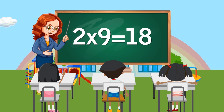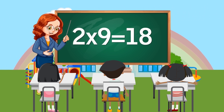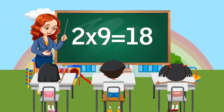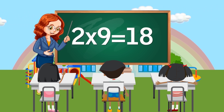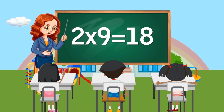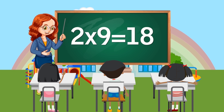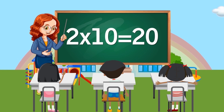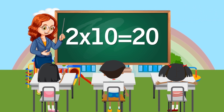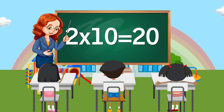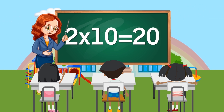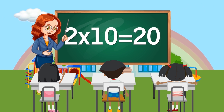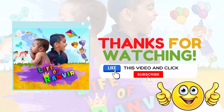Two times nine equals eighteen. Two times ten equals twenty. Thank you for watching my video.